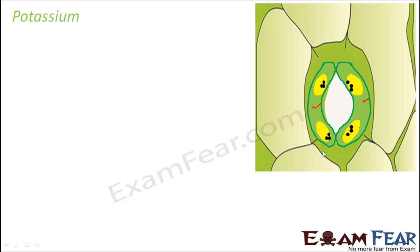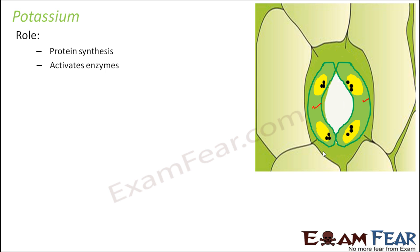Because of that, processes like photosynthesis and transpiration happen in a plant. Potassium also helps in protein synthesis and activates many enzymes. It is the dominant cation — a positive ion, K+ — present in a plant. It activates the enzymes required for photosynthesis, respiration, and the synthesis of proteins and starch. So for all these processes we need enzymes, and those enzymes are activated by potassium.